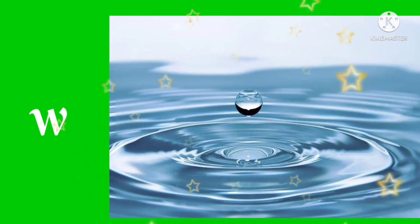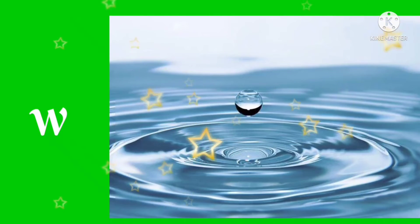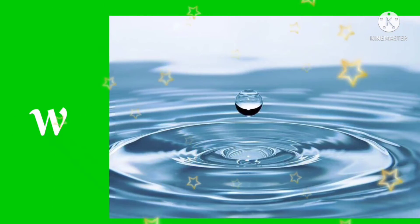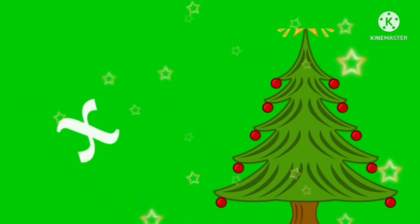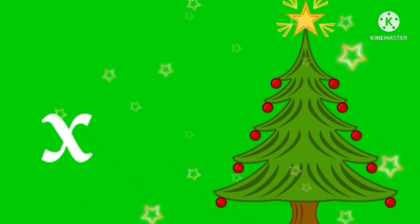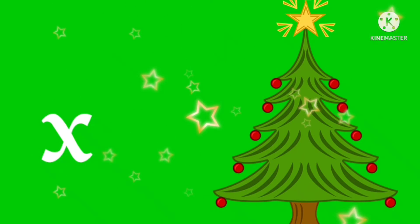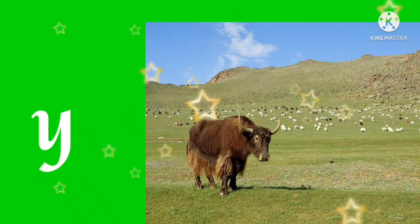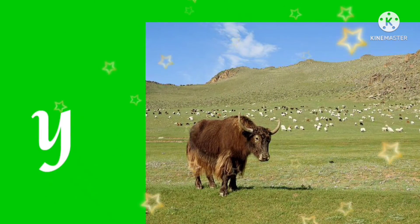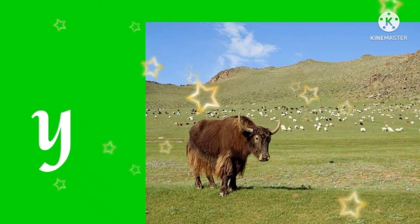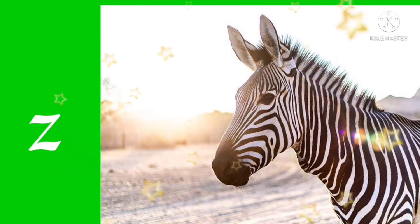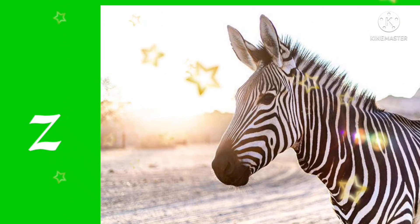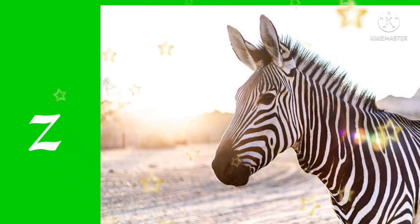W for water. X for x-mas. Y for yak. Z for zebra. So this is your alphabets.